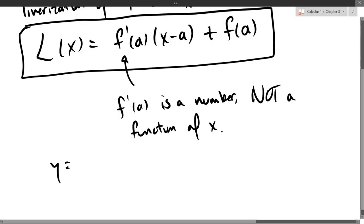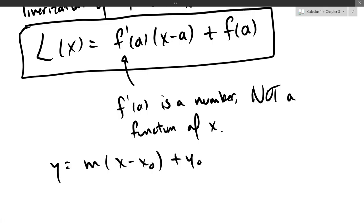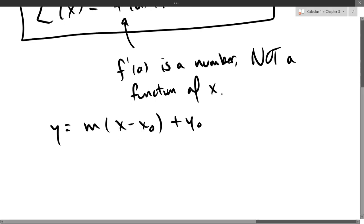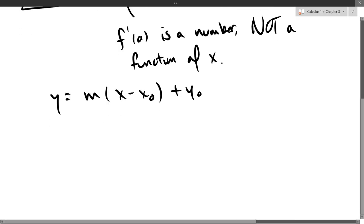And this comes from y equals mx plus b from here. You've got a slope, you have some x value, and you have some y value. And our x value is a, our y value is f of a. So it comes from what you did in, I think this is Algebra 1, or maybe even before. The only difference is our m is now a derivative. That's the only difference.